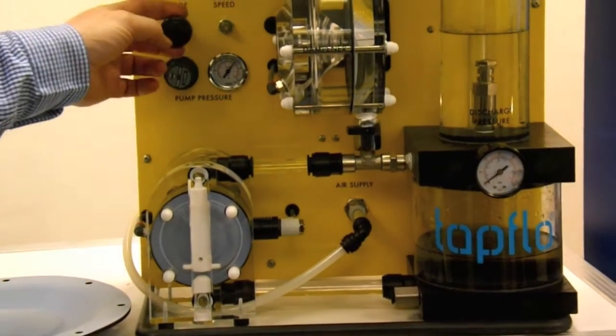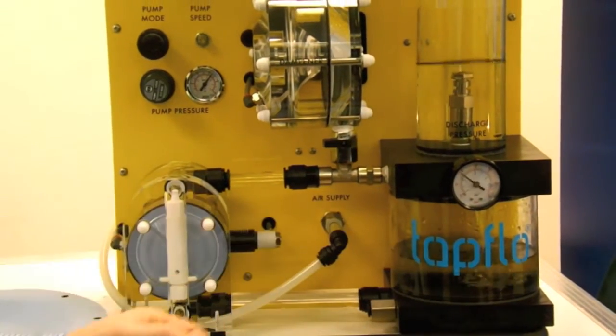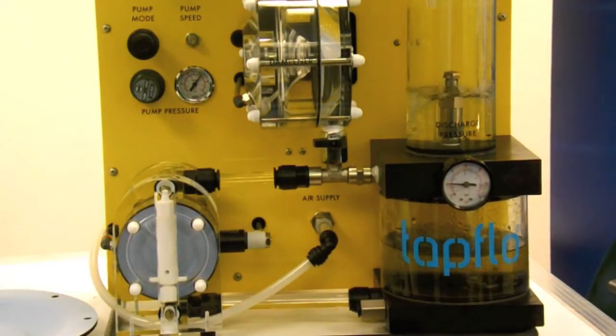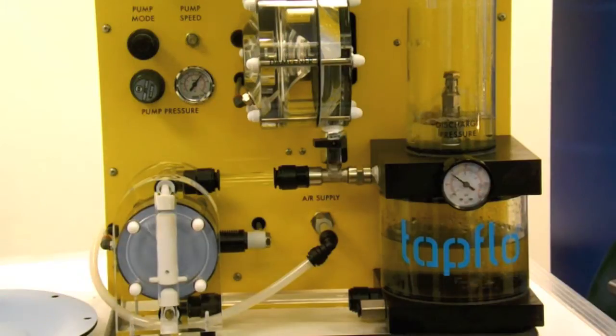Now when we turn the pump on, it's going to pump out from this bottom tank here through the pump and into the top tank. So you can see the pump operating, the non-return valves opening and closing and the diaphragm is moving backwards and forwards.